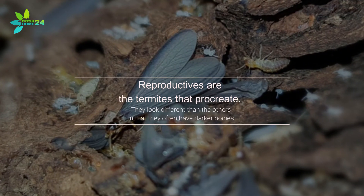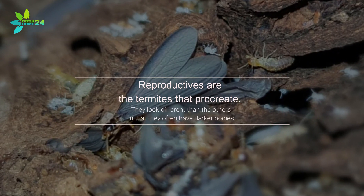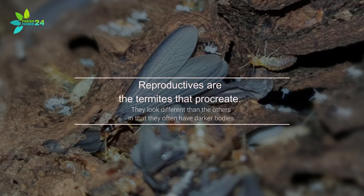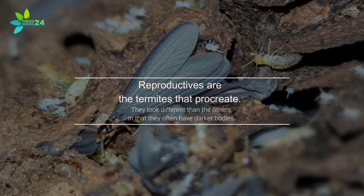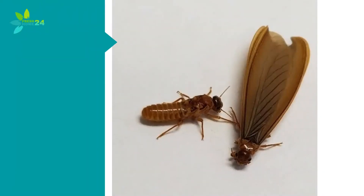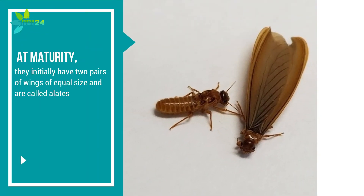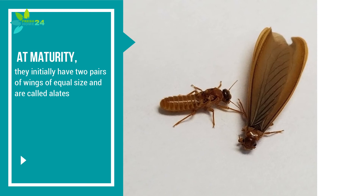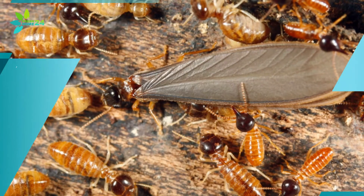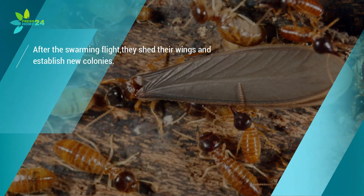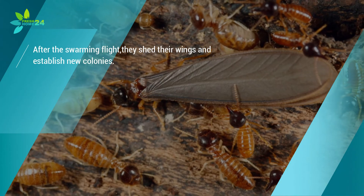Reproductives are the termites that procreate. They look different than the others in that they often have darker bodies. At maturity, they initially have two pairs of wings of equal size and are called alates. After the swarming flight, they shed their wings and establish new colonies.